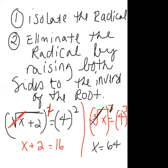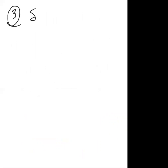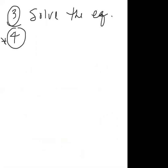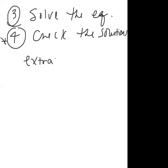Most problems in this session involve square root equations. Step three is to solve the equation. Step four — a critical step — is to check your solutions. Sometimes a solution doesn't make the original problem true. If it doesn't, you must reject it as an extraneous solution, and if it's the only solution, the answer is no solution.